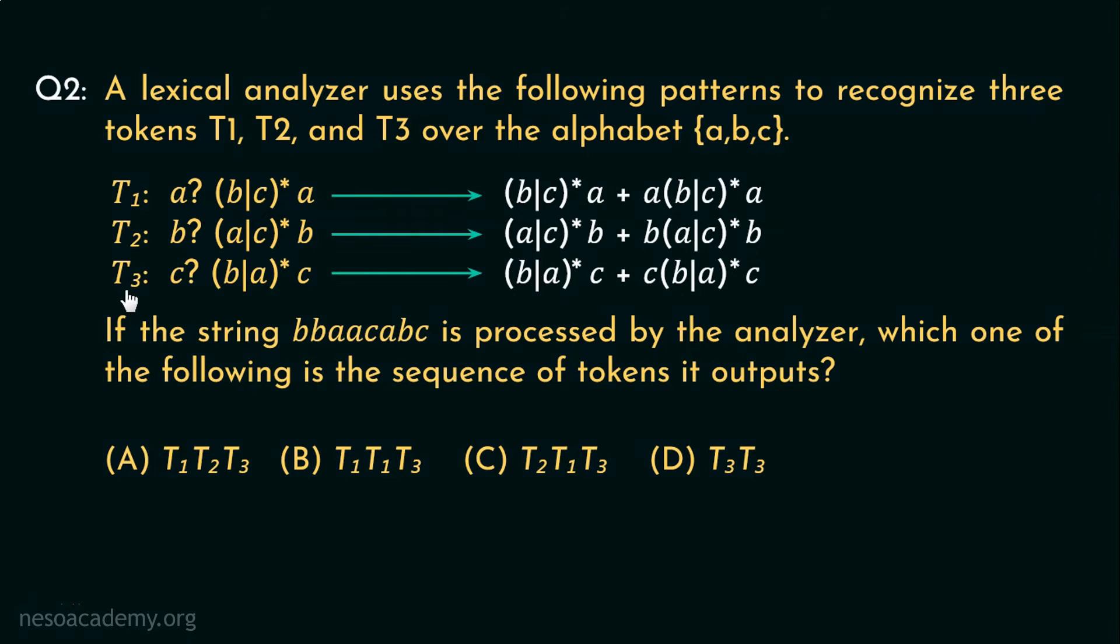For T3, (B or A) clean star closure followed by C or C followed by none or any number of B's or A's followed by a single C. This one signifies zero occurrence of C as a prefix of the regex portion and this one on the other hand signifies one occurrence of C as a prefix to the same regex portion.